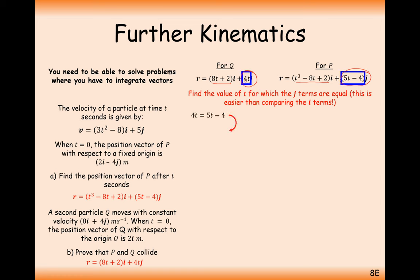Setting the j components equal: 4t equals 5t minus 4, because collision means equality of position vectors. Both i-component positions and j-component positions must equal each other. Rearranging gives t equals 4 seconds.